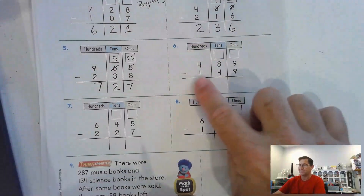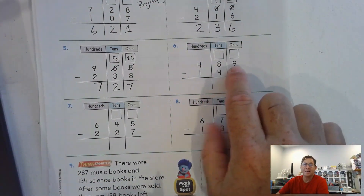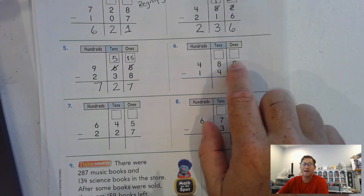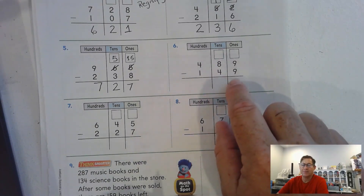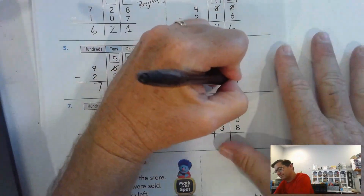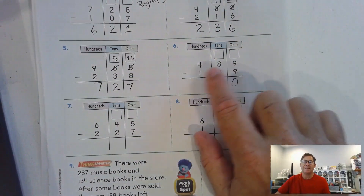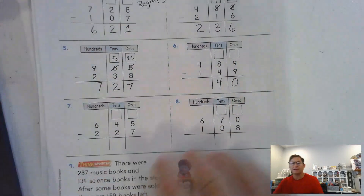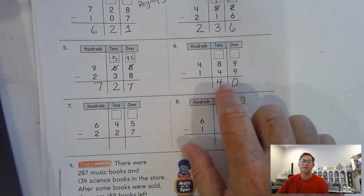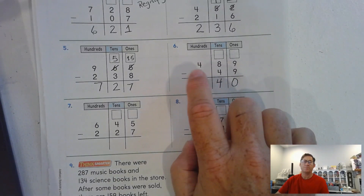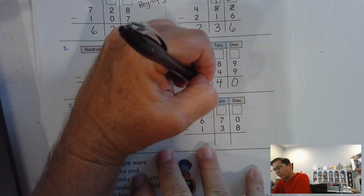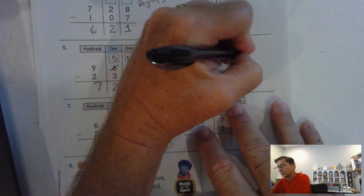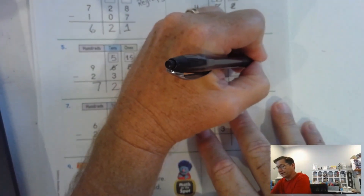Number 6: 489 take away 149. I have 9 ones, and I have to take away 9 ones — we can do that. It's going to leave us 0 ones. 8 tens minus 4 tens leaves 4 tens — 4 is less than 8, so we can subtract that. 400 minus 100 — 1 is less than 4, so we can subtract that. 340, so no regrouping.